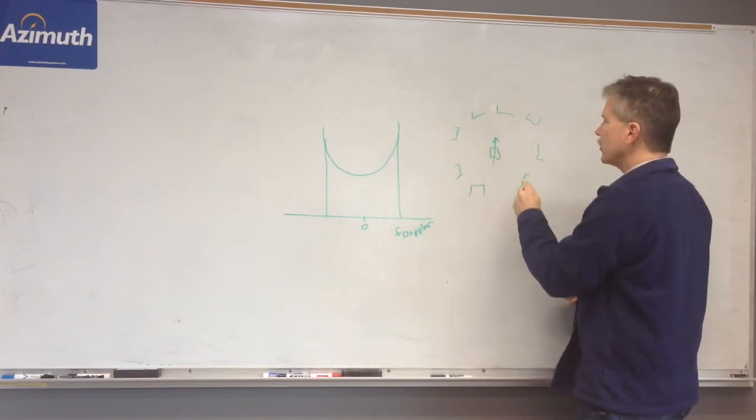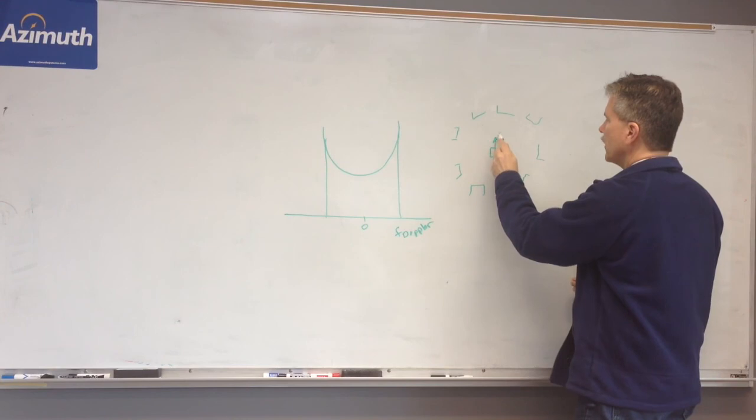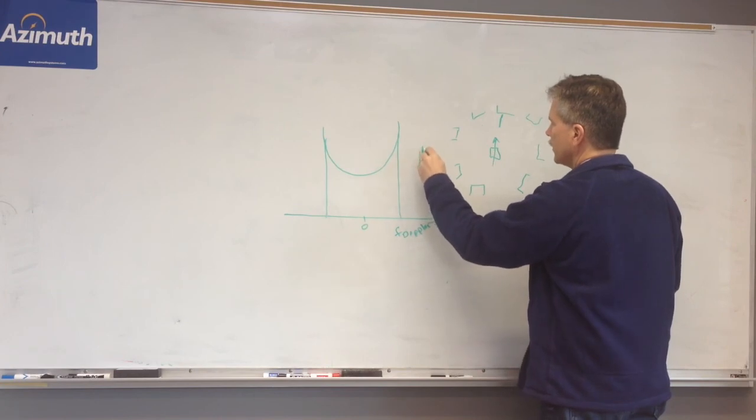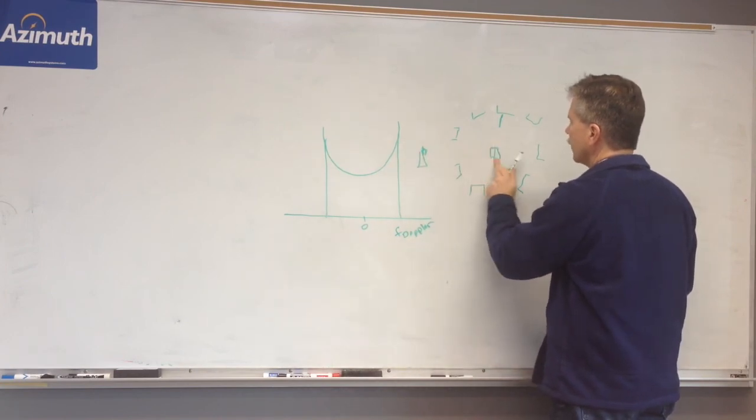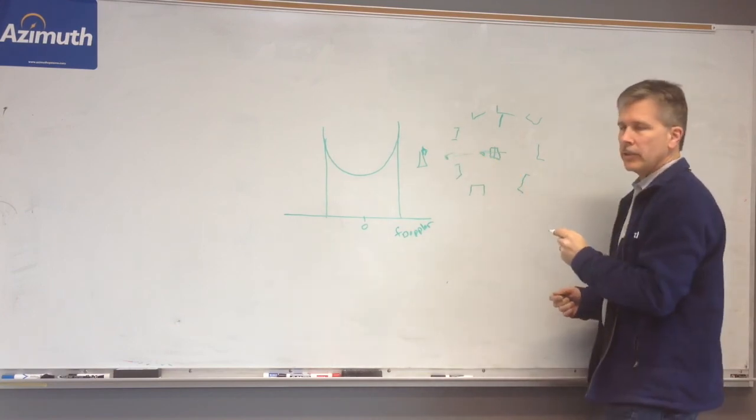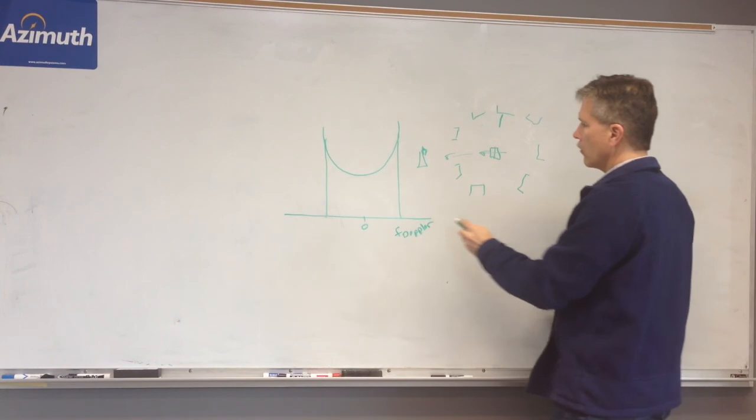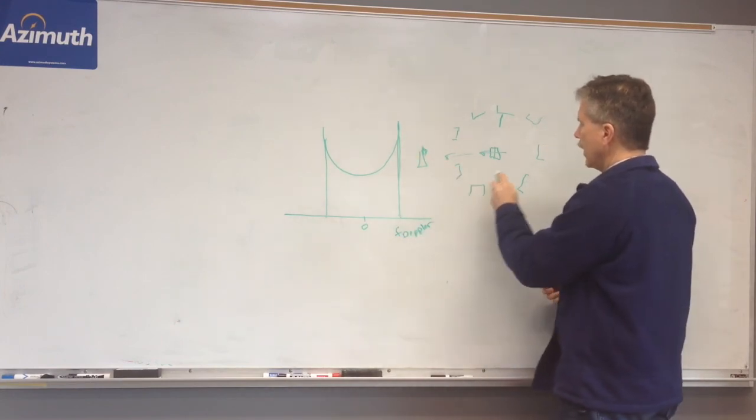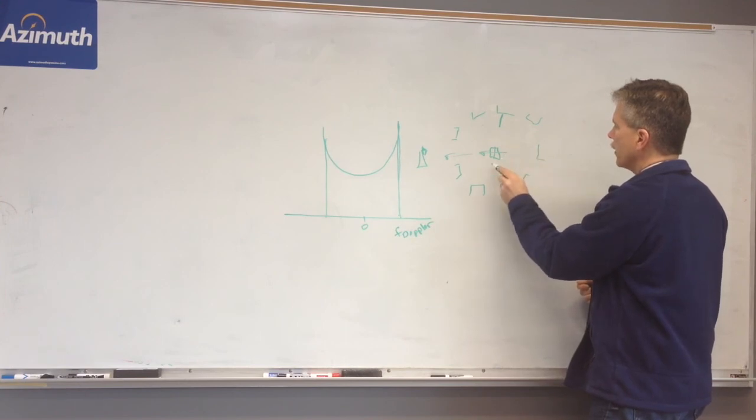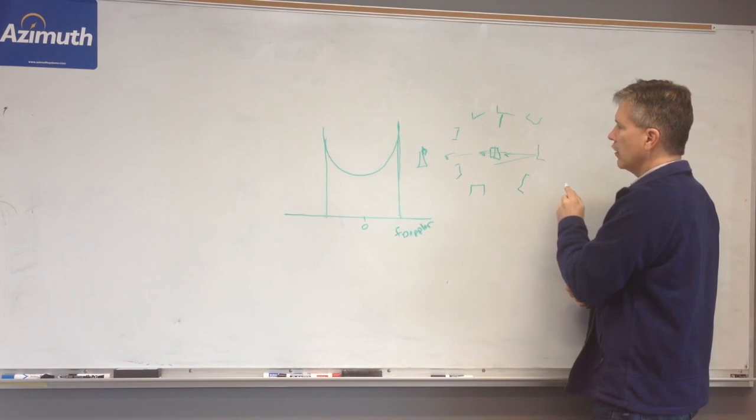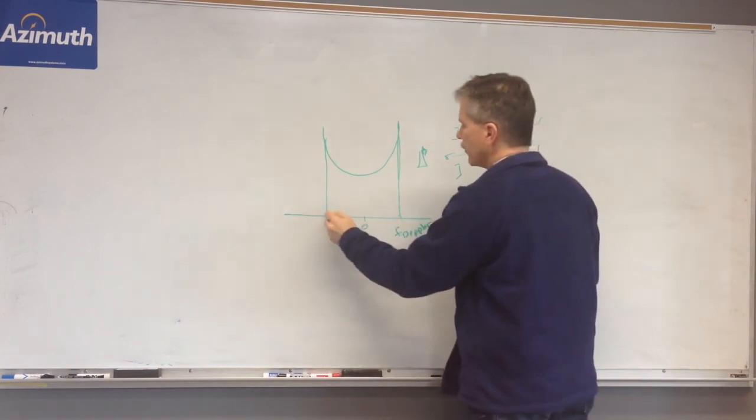So if we're moving this way, then sometimes we're moving directly toward a reflector. Let's draw the base station over here. Okay, so the base station is over here, and let's say that we're going this way. So now, we're driving directly toward the base station.